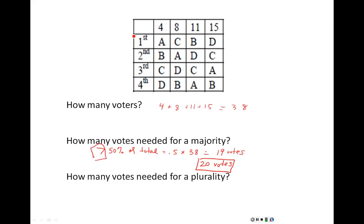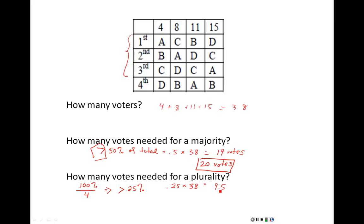For the number of votes needed for a plurality, take 100% and divide by the number of candidates. Since rankings go from first to fourth place, there are 4 candidates, so 100% divided by 4 is 25%. To win by a plurality you need more than 25% of the total votes. So .25 times 38 equals 9.5 — round up to 10 votes. With ties allowed, 10 votes would be the minimum to win.